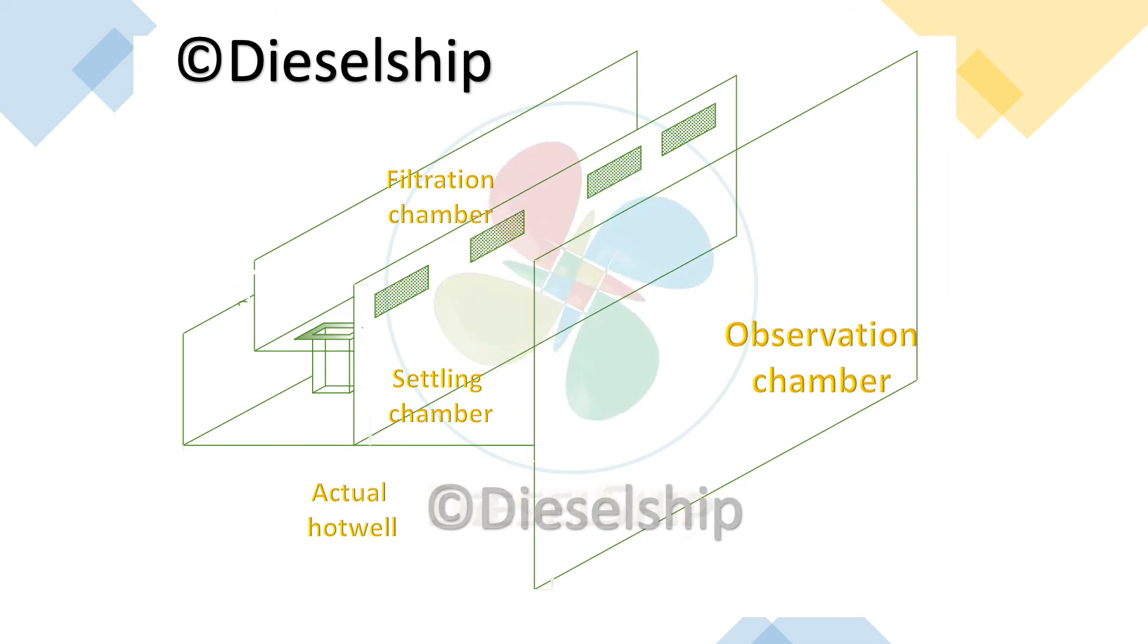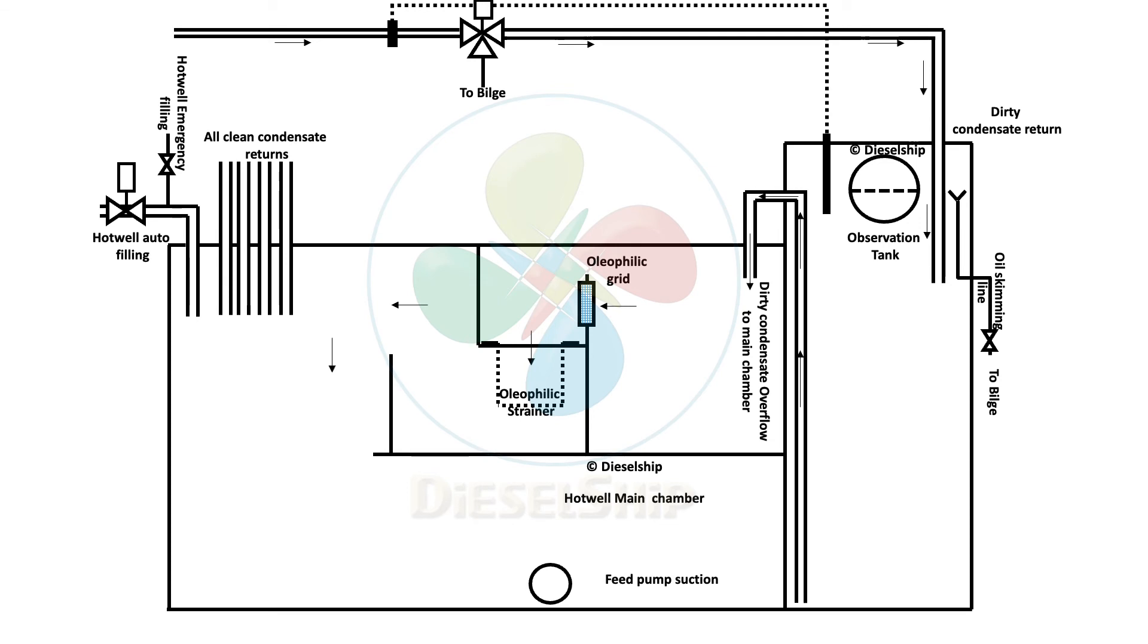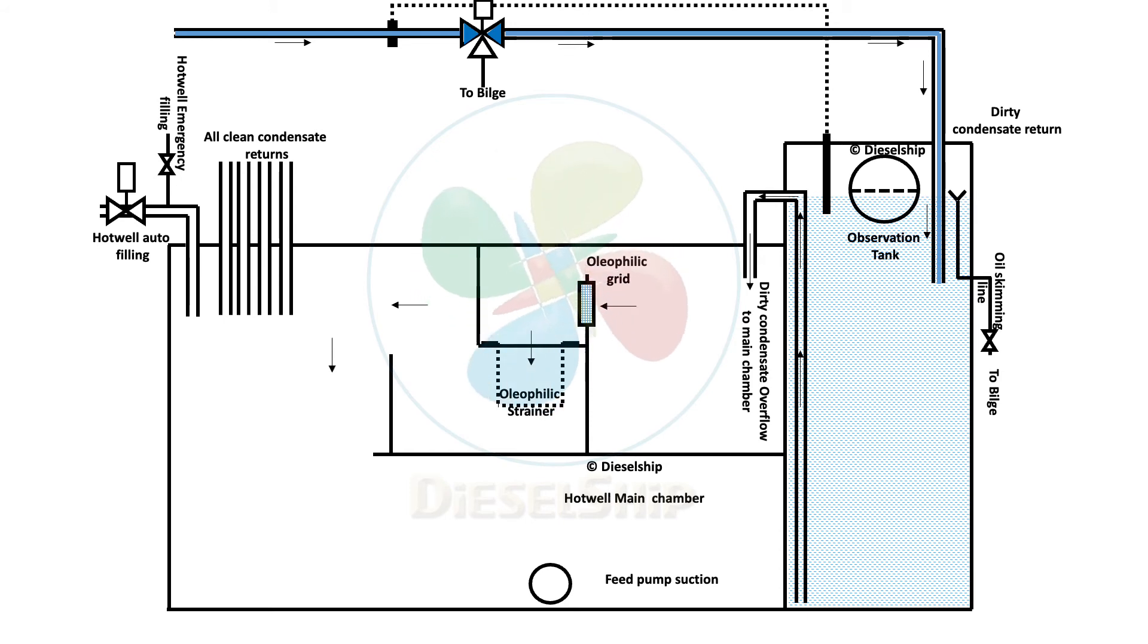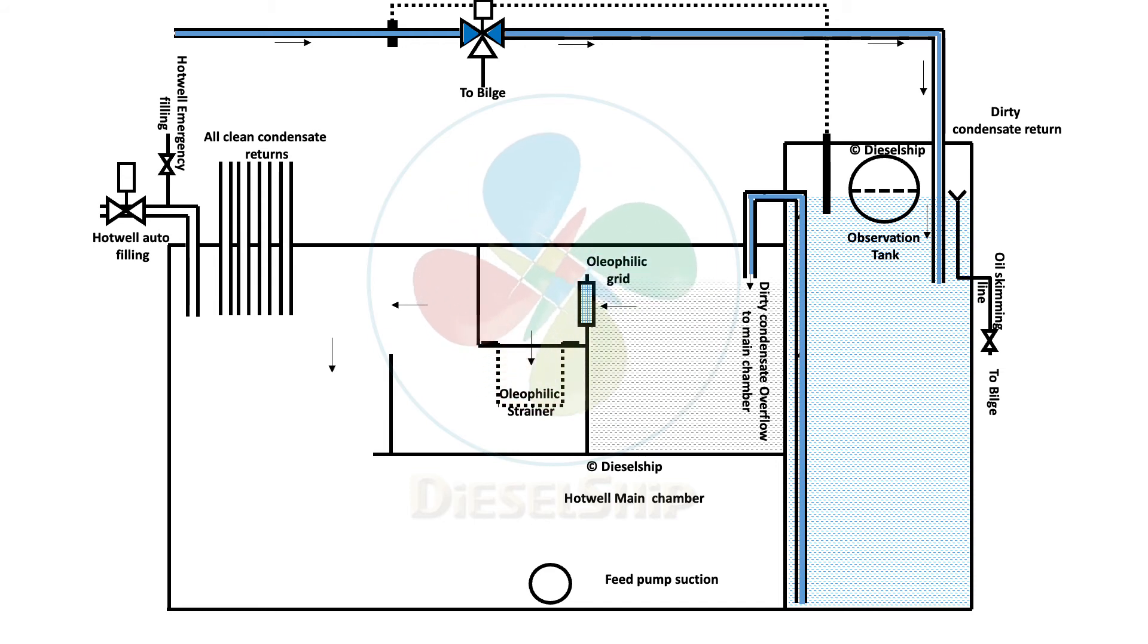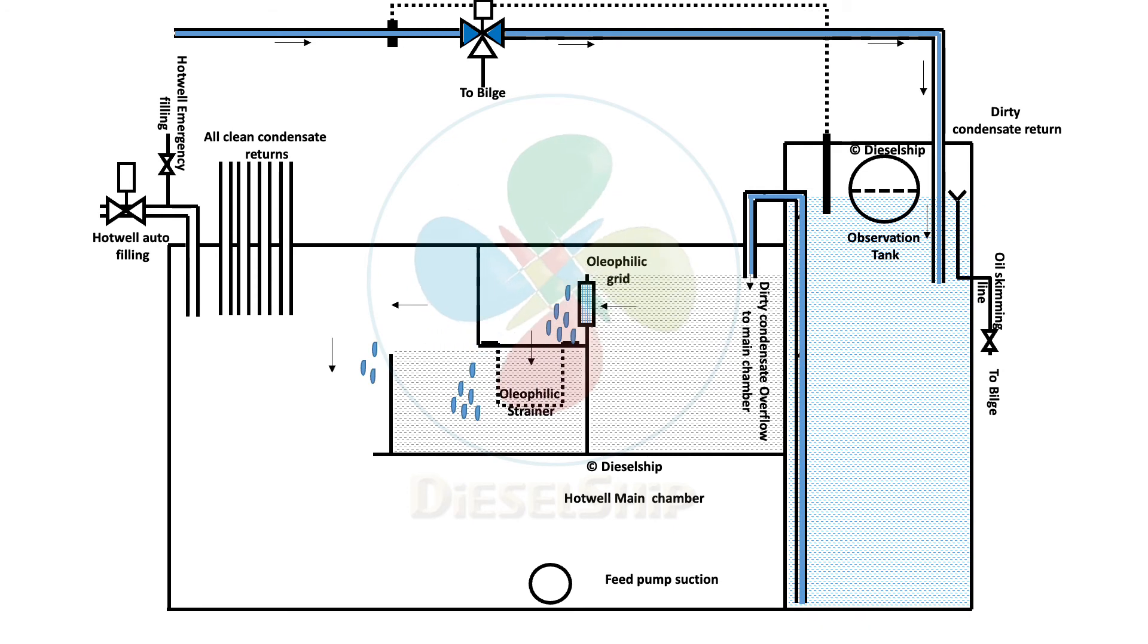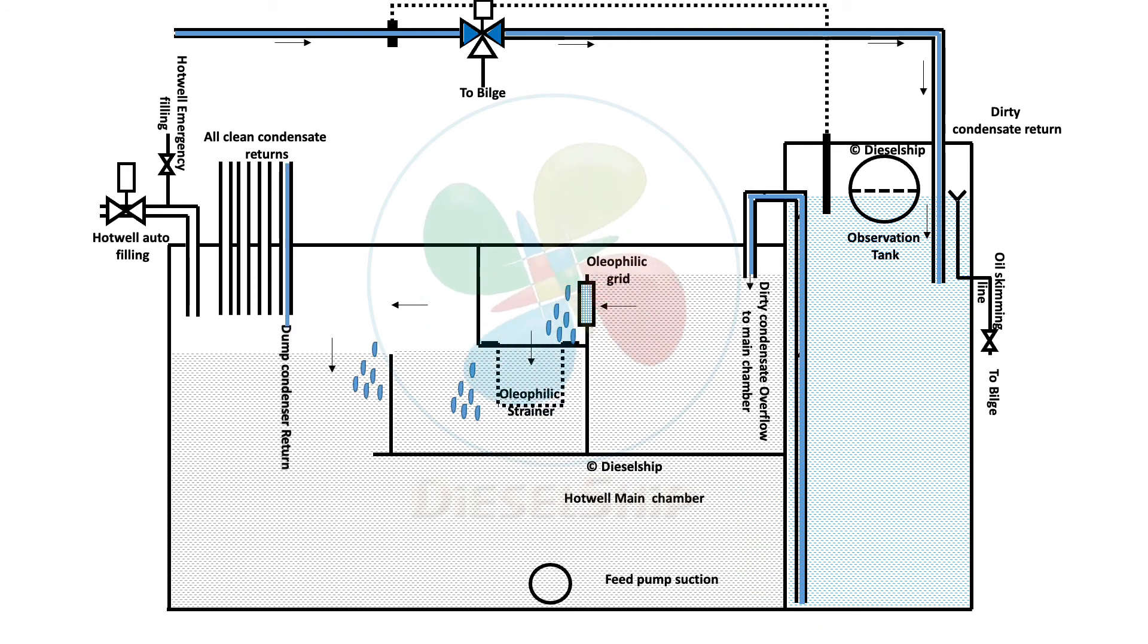The next slide is about the animation. You see the blue shade. The dirty condensate passes through the three-way valve, assuming there is no oil. It comes into the observation tank. Due to gravity, the water flows into the next chamber, which is the settling chamber. From here, it passes through the grids and then goes into the oleophilic strainer. From here, it fills up the filtration chamber. And then, the water will overflow into the main chamber, which is the hot well itself. These are the clean condensate from dump condenser, pools, galley, and they've operated.